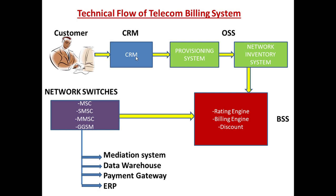The first component is the customer, then there is a CRM. CRM is a main part — CRM is nothing but Customer Relationship Management. It is actually an application or system where the customer order is captured; that is, all details of customers are saved here with order details like which products or services they are using. Different CRMs are available in the market like Microsoft Dynamics CRM, Zoho CRM, Siebel CRM, and Salesforce CRM.